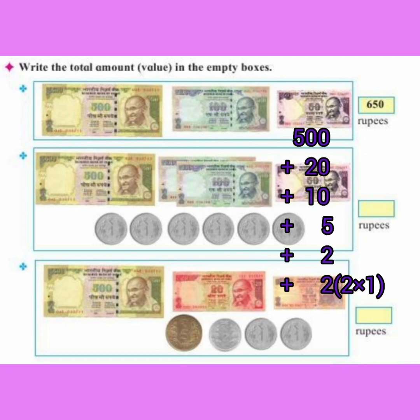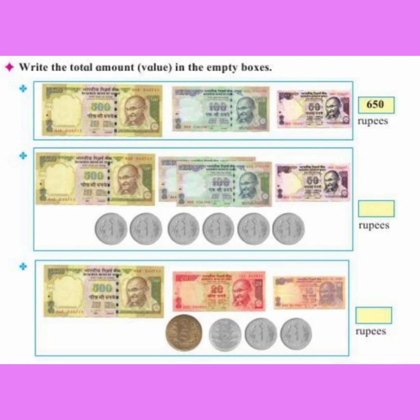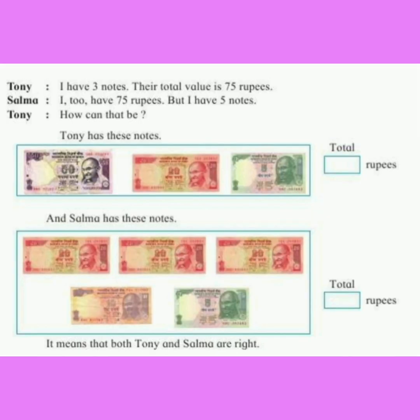500 plus 20 plus 10 plus 5 plus 2 plus 2 into 1, which is equal to 2. So the total amount is 539 rupees.